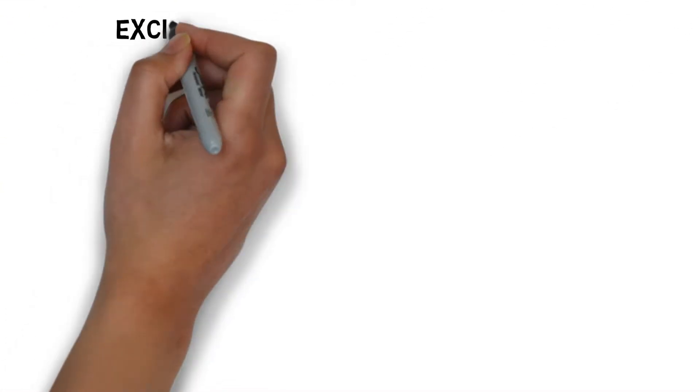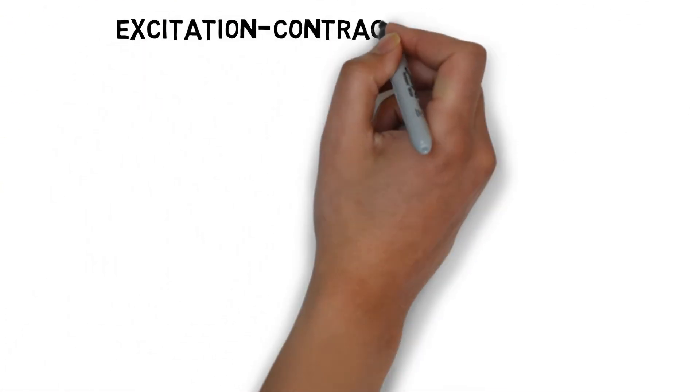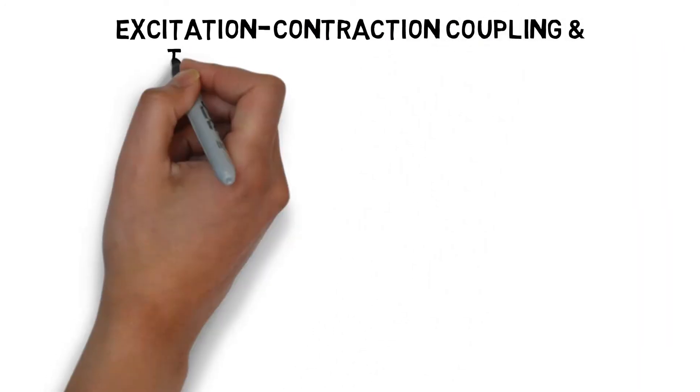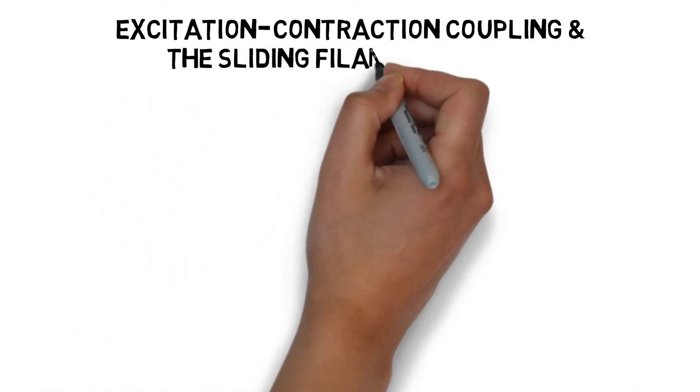The collective process of neurostimulation that results in a muscle contraction is called excitation-contraction coupling. This includes the proposed process involving muscular filaments, more commonly known as the sliding filament theory.